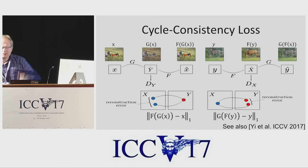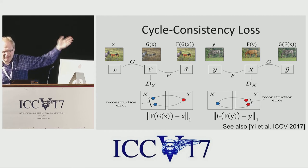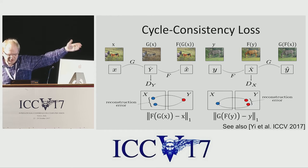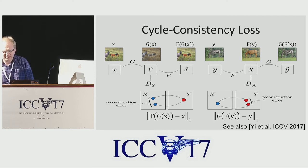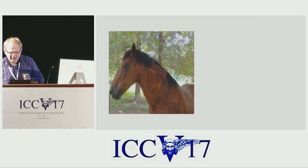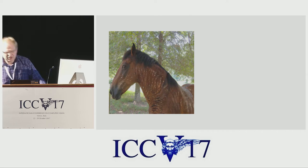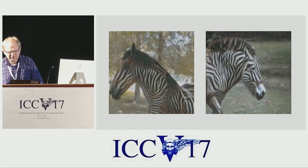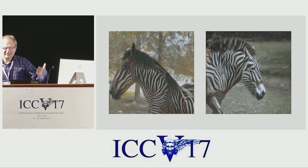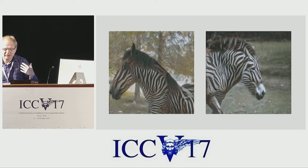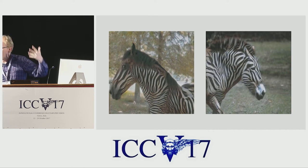If you squint a little, this is basically an autoencoder with deep supervision in the middle, where the supervision comes from the other domain. We do it from both directions so that it's symmetric. This work is published at ICCV, and there's actually another paper that came up with the same story also at ICCV. We can convert horses into zebras and zebras into horses — it's the same algorithm. Notice that it's actually solving an unsupervised correspondence problem, because nobody told it what the corresponding zebra is.